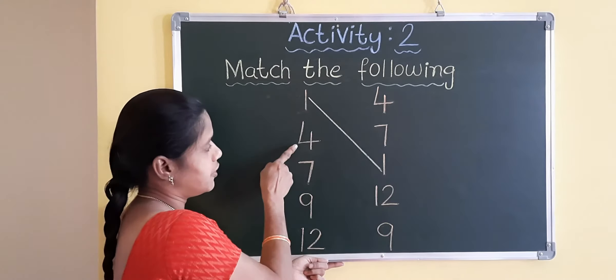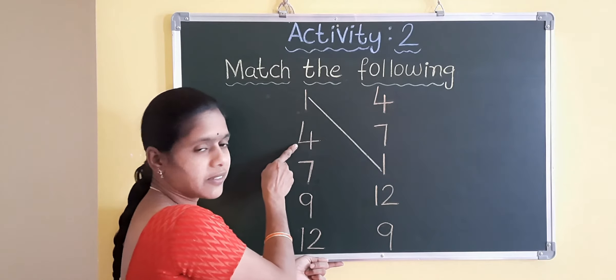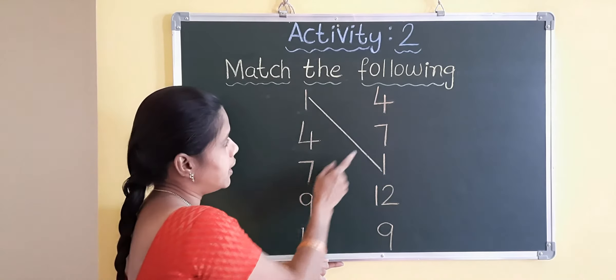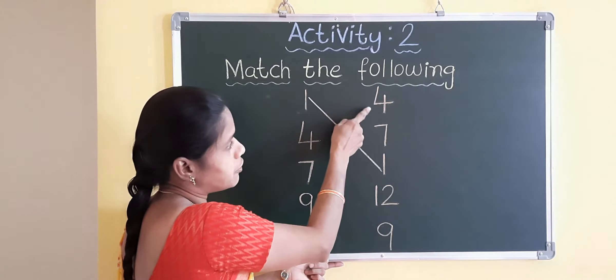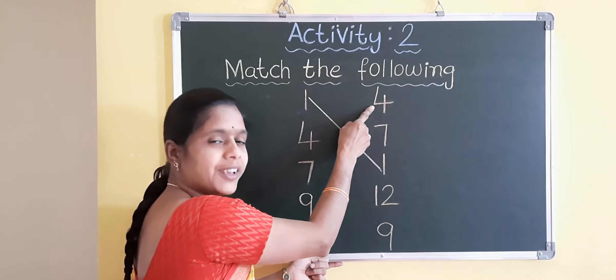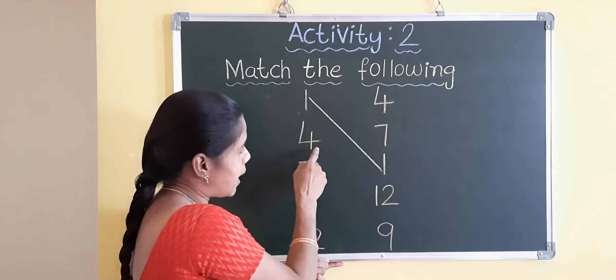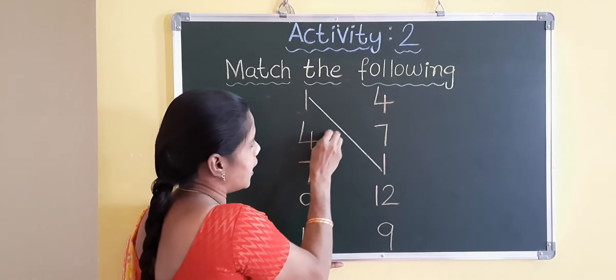Next, which number is this? Yes, this is number four. Right side, where is the number four? Is it four? Yes. So, match it. Draw the line.